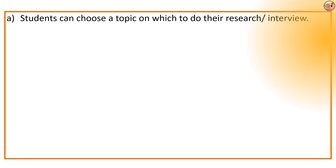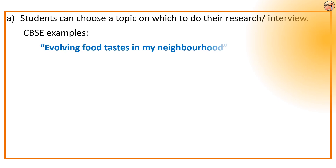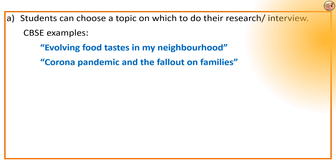You can choose a topic on which you want to do research or interview somebody. Two examples are given by CBSE to help you understand how to go about it. The first topic is 'evolving food tastes in my neighborhood,' where your objective will be how you and your team members can discover the evolving food tastes in your neighborhood. The second example is 'coronavirus pandemic and the fallout on families,' where you focus on how you and your partner can find out the effect or consequences of the pandemic on families in the neighborhood. This open-ended question helps in exploration of your project.